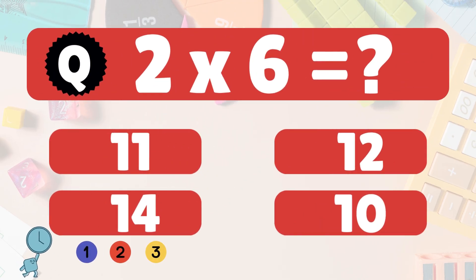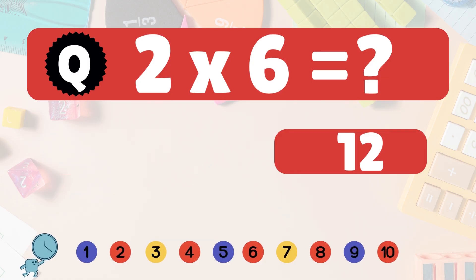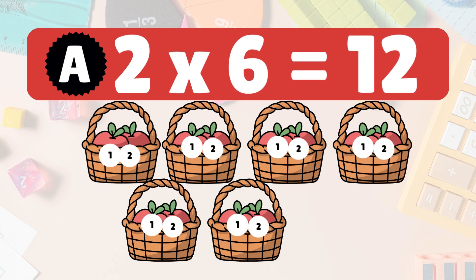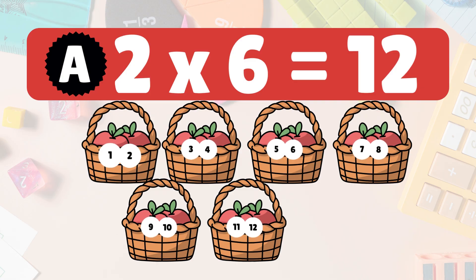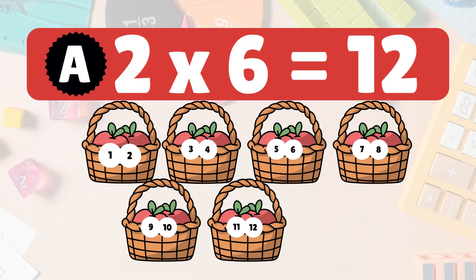Next, 2 times 6 is what? 2 times 6 is 12. Here we have 6 groups of 2 apples each. Let's count them all: 1, 2, 3, 4, 5, 6, 7, 8, 9, 10, 11, 12. So 2 times 6 is 12 apples.